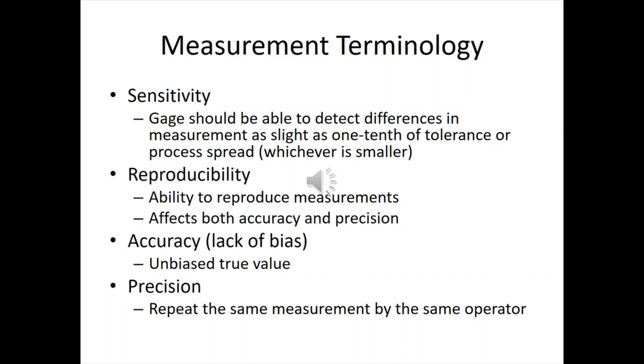First thing you need to know is sensitivity. You want your gauge to be able to detect differences in the measurement. Rule of thumb, about one-tenth of the tolerance or the process spread, whichever is smaller. So for instance, if you've got a one-inch tolerance, you want it to be one-tenth of an inch on your gauge.